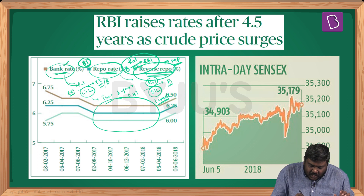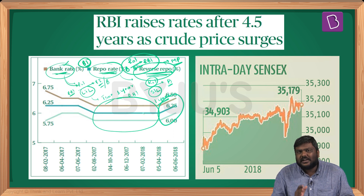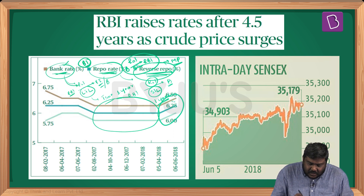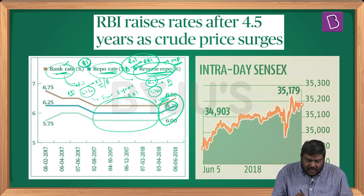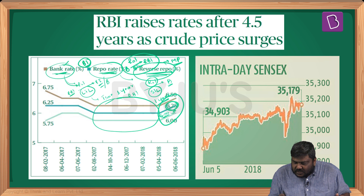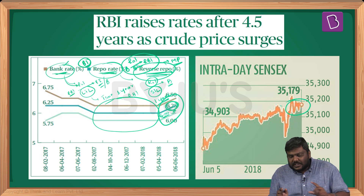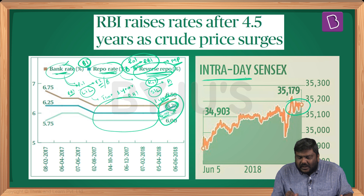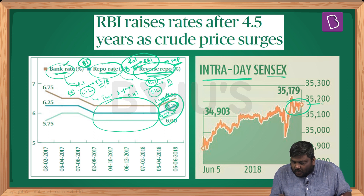The monetary policy committee announced yesterday that it is going to increase the repo rate by 25 basis points. Earlier the repo rate was 6%; it has now been increased to 6.25%. As a result, you can see on the right side that the intraday SENSEX hit over 35,000 points.